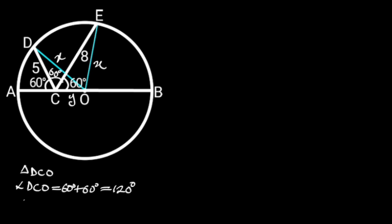Now, from cosine rule, OD squared is equal to CD squared plus OC squared minus 2 times CD times OC times cos 120 degrees.